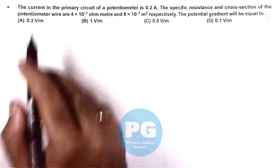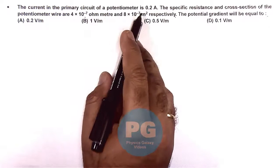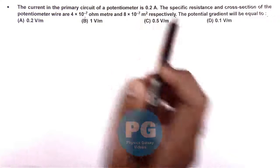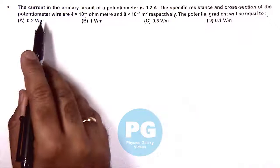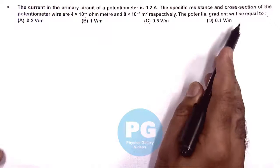In this question it is given that the current in the primary circuit of a potentiometer is 0.2 ampere, and the specific resistance and cross-section area of the potentiometer wire are also given. We are required to find the potential gradient.